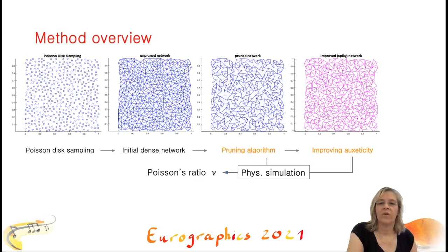Here is an overview of our method and the type of results we obtain. After generating the initial network, we apply our pruning algorithm, which iteratively removes edges from the network. And then we apply a vertex displacement step, which further improves the auxeticity. We finally compute the Poisson's ratio using a physical simulation.